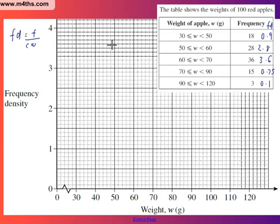So let's do it in pink. The first one is going to be 0.9. So 0.9 is going to be from 30 to 50. So we need to go from 30, and there's 0.9 to 50, and then down, and there's our first block.